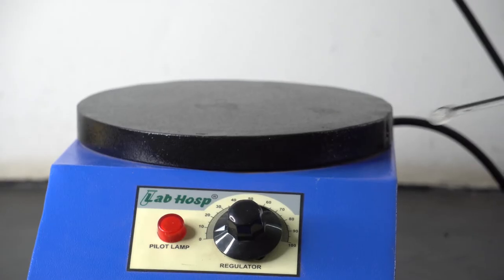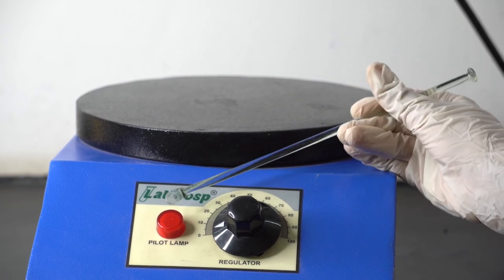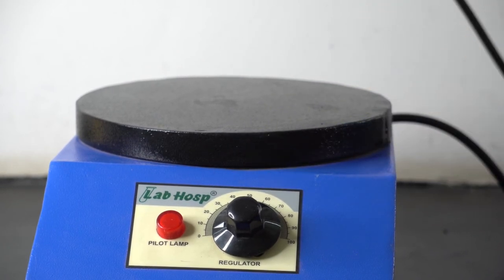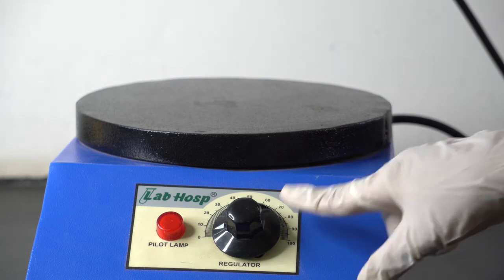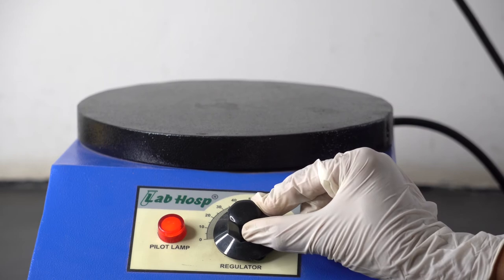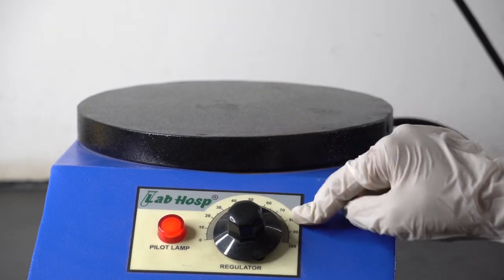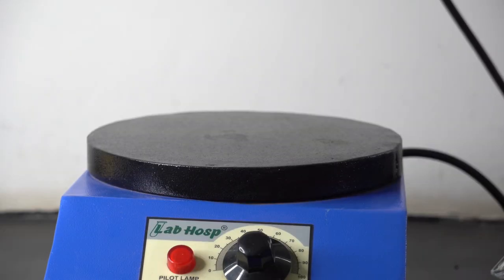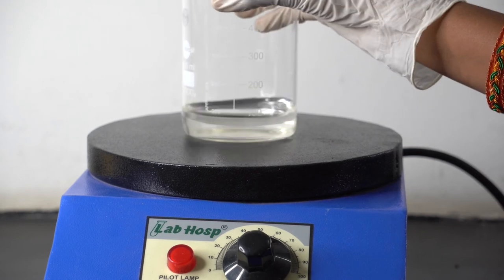As we can see on the hot plate, we have a pilot lamp and regulator to set the required temperature. Therefore, we can set the temperature on low, medium, and high with the help of the regulator knob. Now put the sample container on the hot surface.